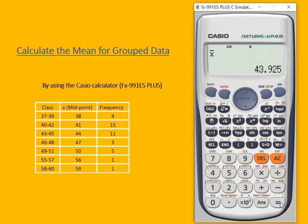This is the mean for this grouped data: 43.925. We can fix this to two decimal places, one decimal place - it depends. Okay, thank you.